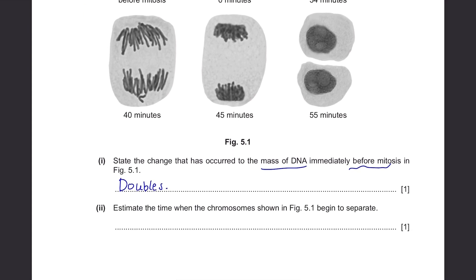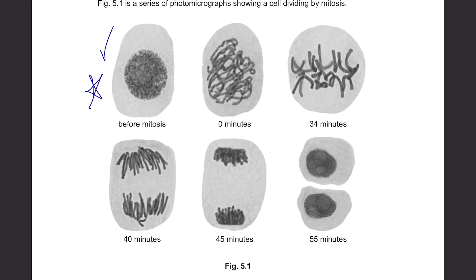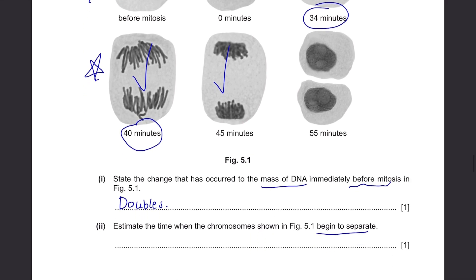Estimate the time when the chromosomes shown in Figure 5.1 begin to separate. At 45 minutes they're already separated, and there's nothing going on at 0 minutes. From 34 minutes to 40 minutes, separation starts occurring at 40 minutes. So you can write any figure between 34 and 39, or just write 35 minutes.